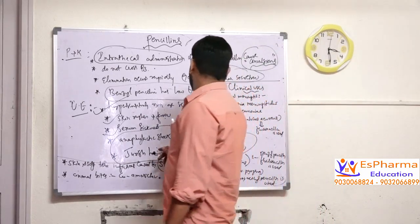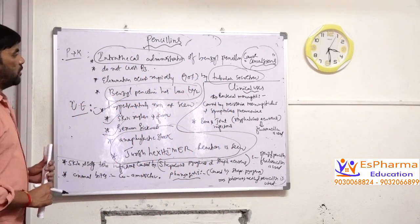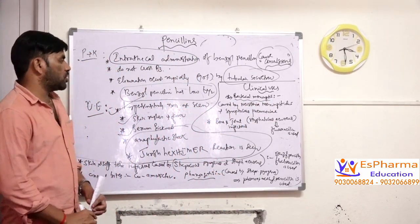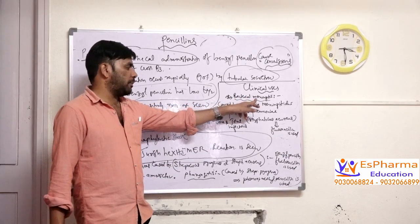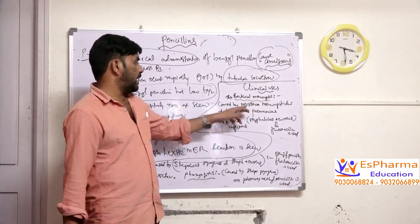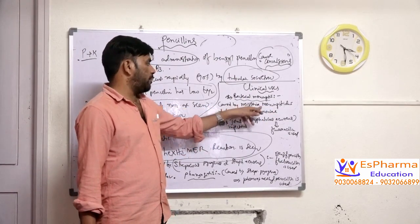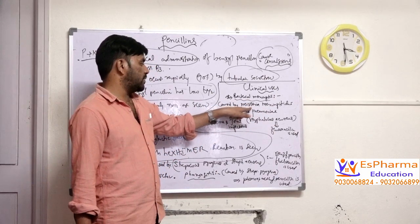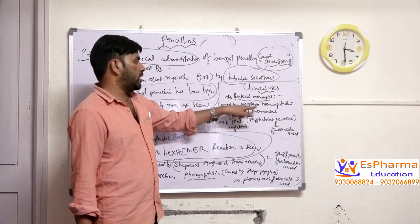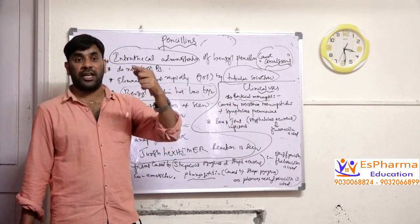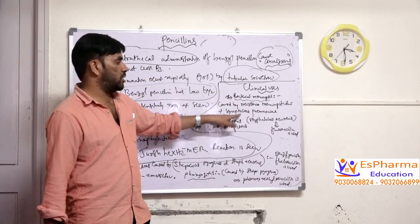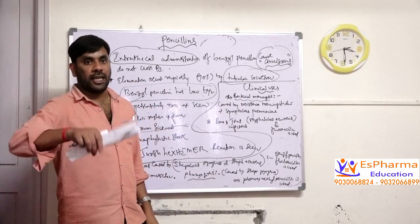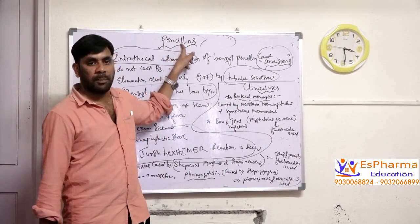Looking at the clinical uses of penicillin: first, penicillin is used in the treatment of bacterial meningitis. This bacterial meningitis is caused by Neisseria meningitidis and Streptococcus pneumoniae. Penicillin is used to treat the bacterial meningitis caused by these two species — Neisseria meningitidis and Streptococcus pneumoniae.